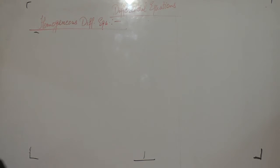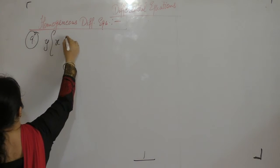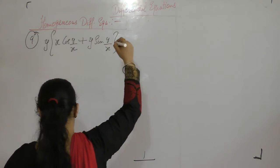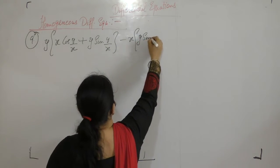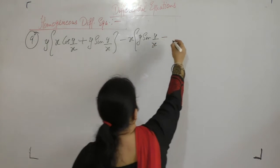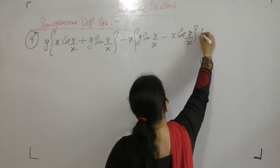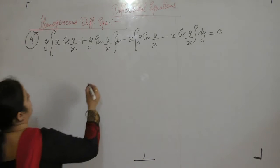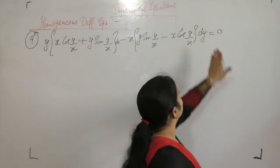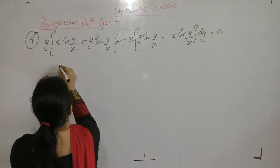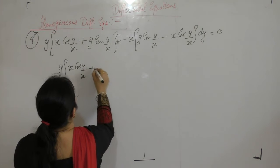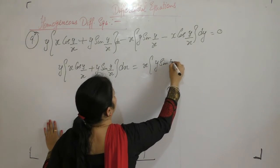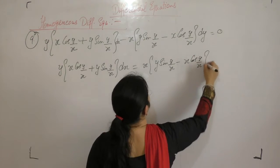Question number 9: Solve y times x cos(y/x) plus y sin(y/x) minus x times y sin(y/x) minus x cos(y/x) dy equals zero. Rearranging, y times x cos(y/x) plus y sin(y/x) dx equals x times y sin(y/x) minus x cos(y/x) dy.